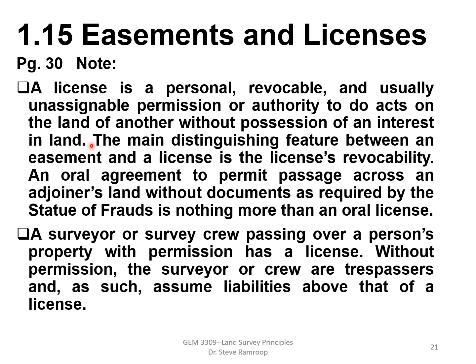The main distinguishing feature between an easement and a license is that the license is revocable — you can take away the license, while an easement cannot just be taken away; it has specific characteristics and conditions. An oral agreement to permit passage across an adjoiner's land without documents as required by the statute of law is nothing more than an oral license. A surveyor or survey crew passing over a person's property with permission has a license; without permission, it is trespass.